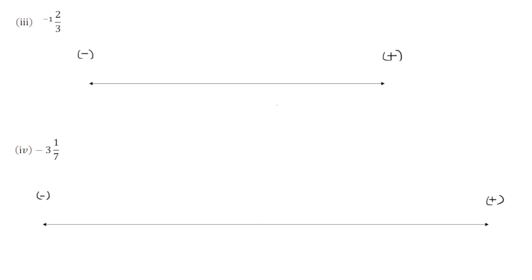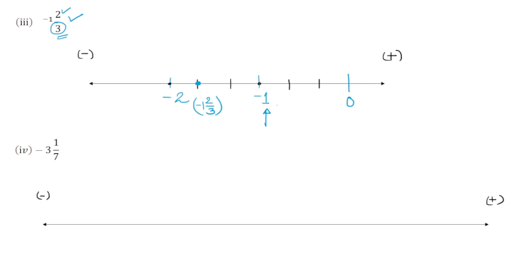Question number 3 is minus 1, 2 by 3. It is a negative number, so it will lie on the left side. We mark 0, minus 1, and minus 2, then divide each section into three equal parts as the denominator is 3. Since this number is in mixed fraction form, it lies on the left hand side of minus 1. We locate the second partition out of three, and that is the location of minus 1, 2 by 3.